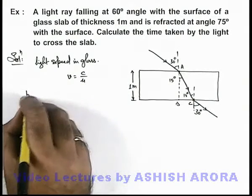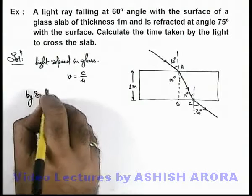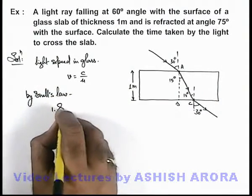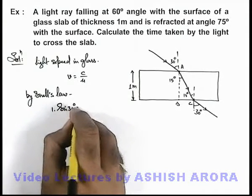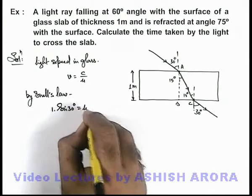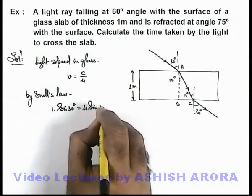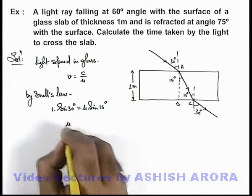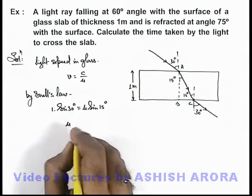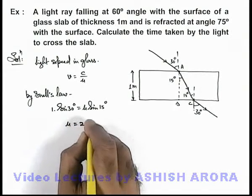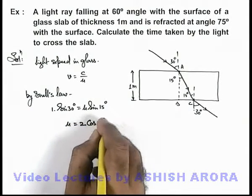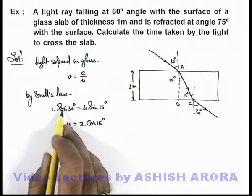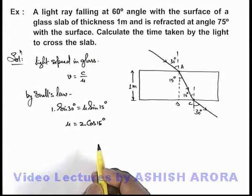And here by Snell's law we can write, on the top surface, 1 into sine 30 degree is equal to μ of glass multiplied by sine 15 degree. So this will give us the value of refractive index of glass as twice of cos 15 degree, as I can split this sine 30 in half angle form as 2 sine 15 cos 15. Sine 15 gets cancelled out.